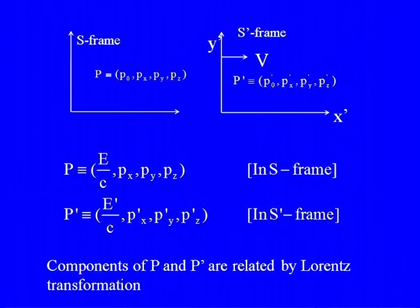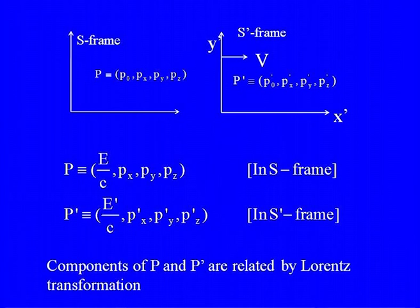To put things in perspective: for the momentum 4-vector, the 0th component is E/c — energy divided by c — and then p_x, p_y, p_z are the other three components. In an S′ frame moving with constant velocity v with respect to S, the components will be different, but the norms of the 4-vectors will be the same.